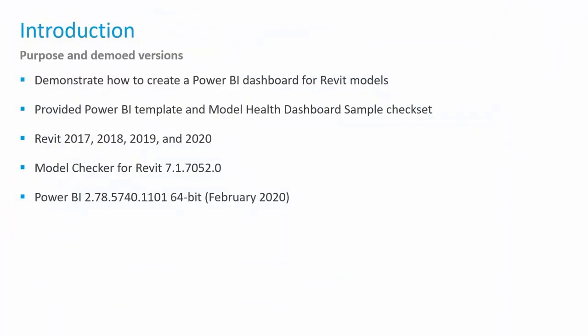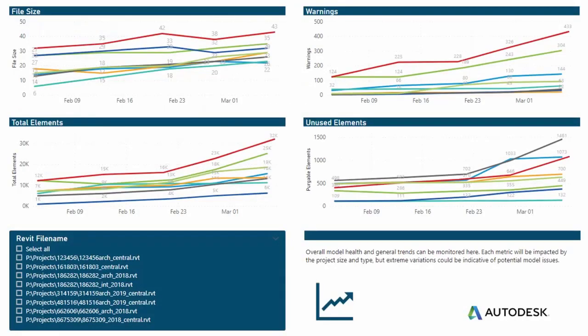There is a provided Power BI template and an already-created model health dashboard sample check set. If you used the prior dashboard, it's the exact same check set file, but there is now a new Power BI template you can leverage. It's been designed and has worked for Revit versions 2017 through 2020, running on the current version of Model Checker. The dashboard was built on the February 2020 release of Power BI. Ideally, once we're done with this video, you'll be able to generate trending reports for multiple Revit models inside of Power BI.